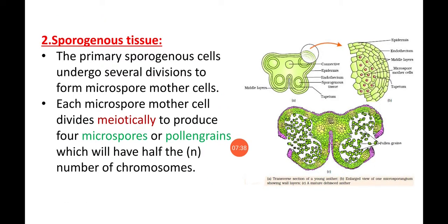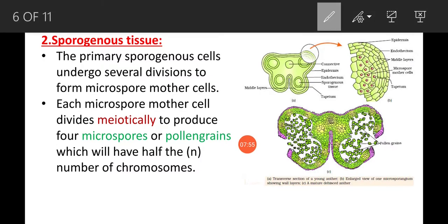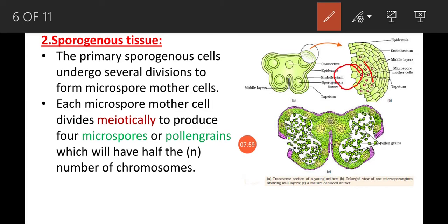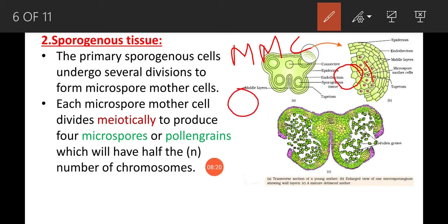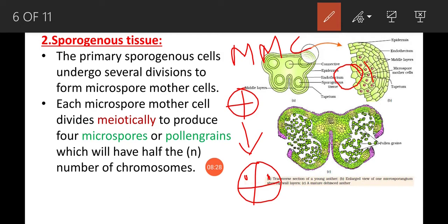The second part of the transverse section of the anther is the sporogenous tissue, which is present inner to the tapetal cells. The sporogenous tissue undergoes divisions to form microspore mother cells. These microspore mother cells undergo meiotic division resulting in the formation of a pollen tetrad, which is haploid. When the pollen grains are separated from the tetrad, they are called pollen grains.